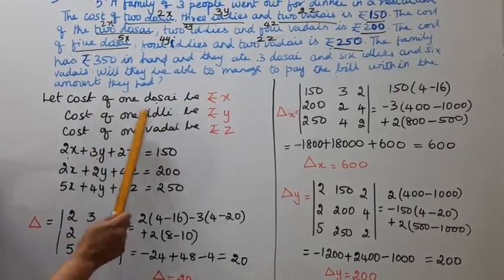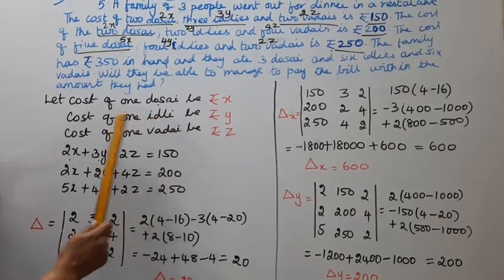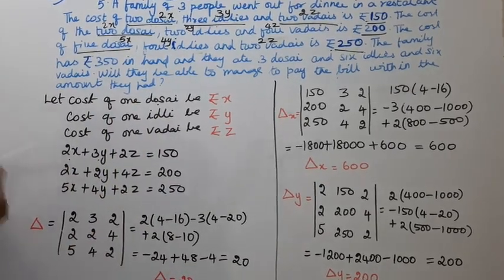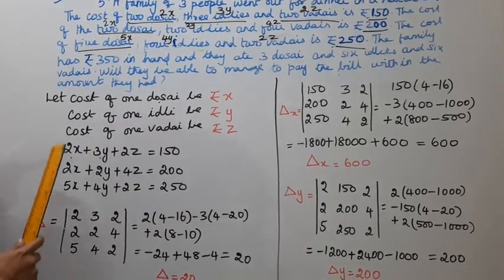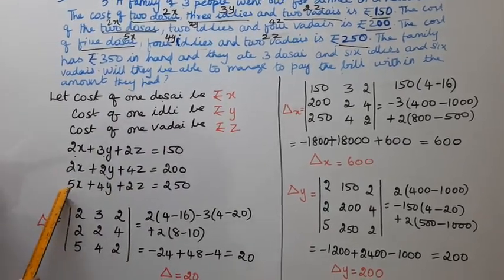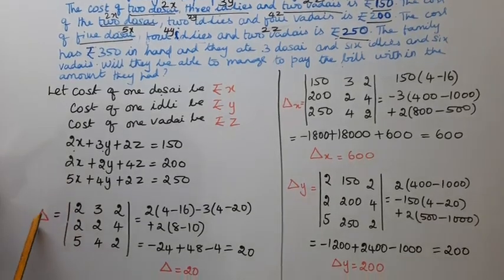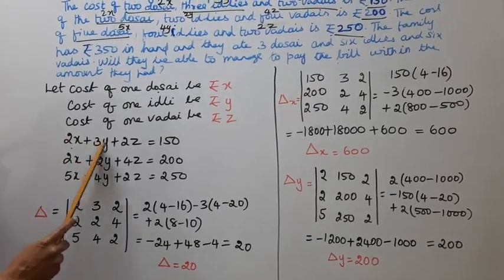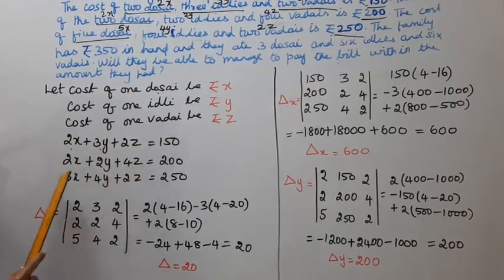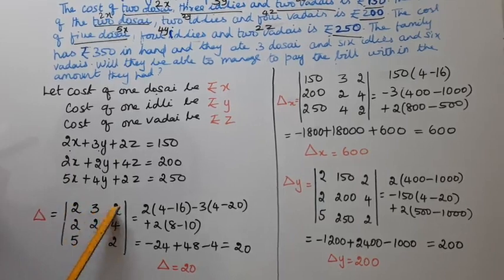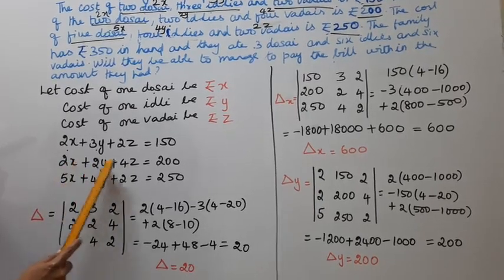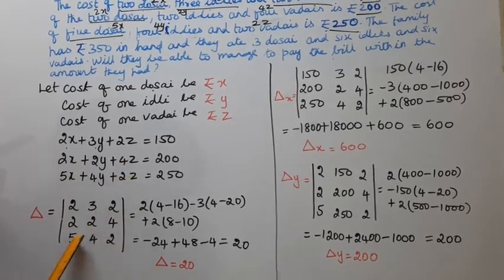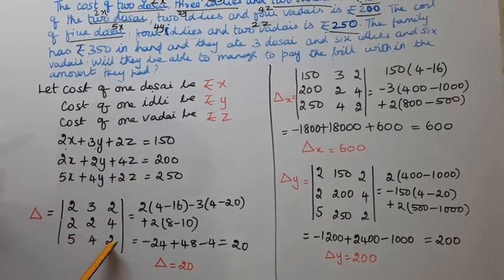Now let's find the value of delta (the coefficient determinant). The coefficient matrix is formed with rows [2, 3, 2], [2, 2, 4], [5, 4, 2].